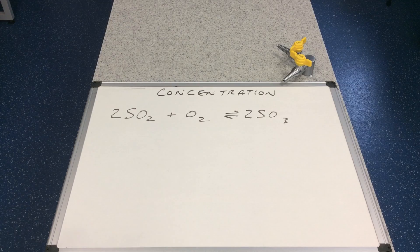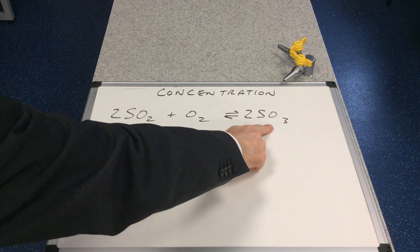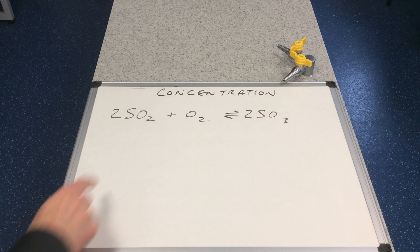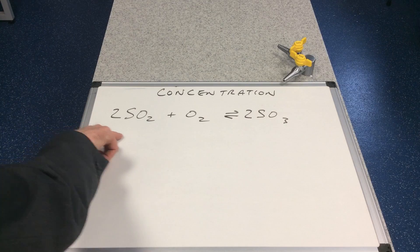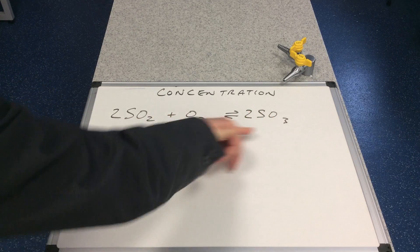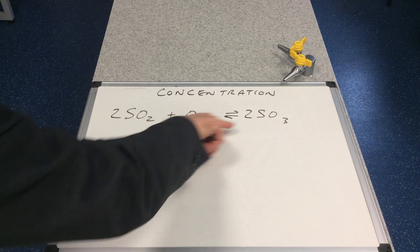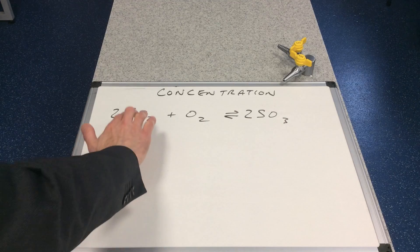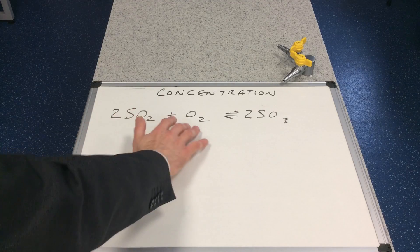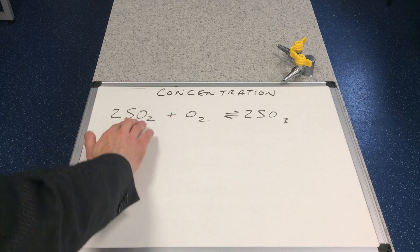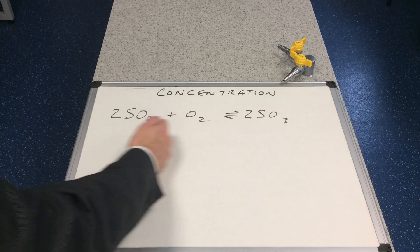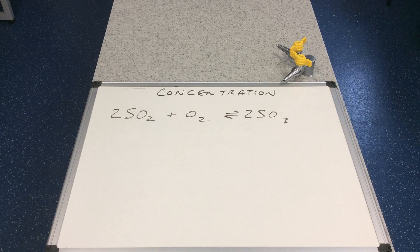What if we reduce the concentration of SO₃? If something is added to remove SO₃, the equilibrium would respond by putting SO₃ back in, so the forward reaction would occur more and the equilibrium would shift to the right to build that concentration back up. Likewise, if we reduce the concentration of either reactant — for example SO₂ — the equilibrium would move to the left to build that concentration back up, and the reverse reaction would come into play more.